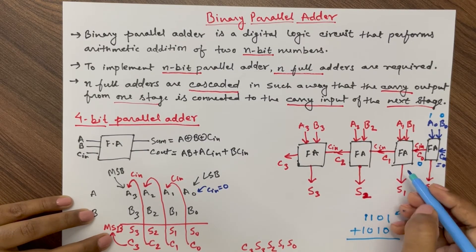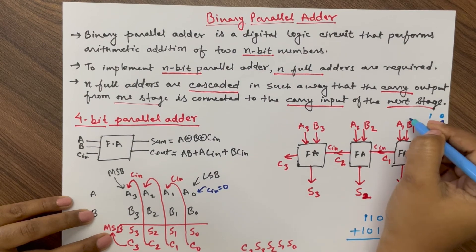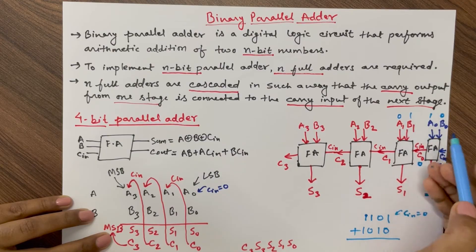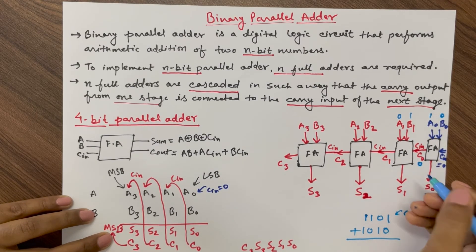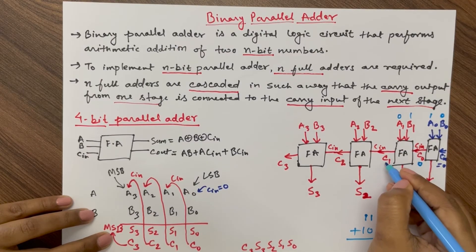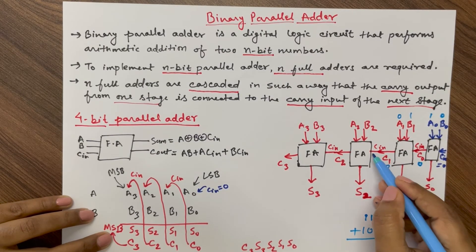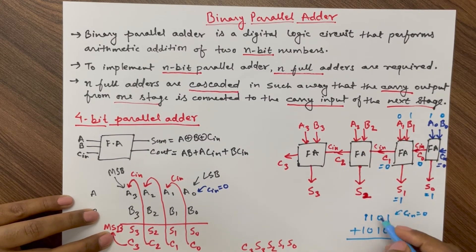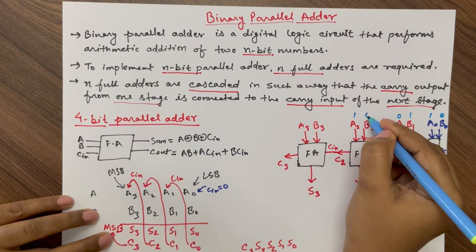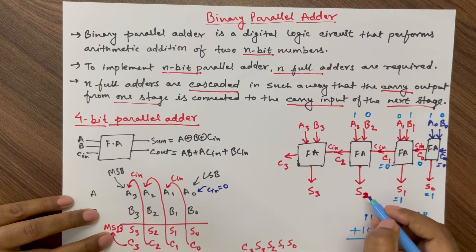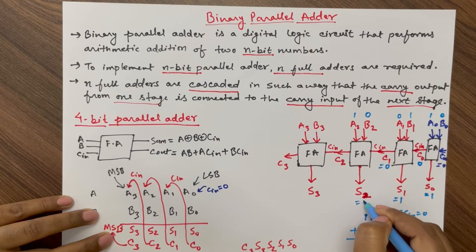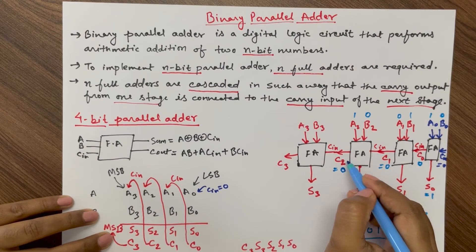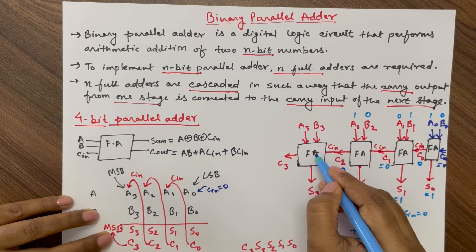For the next stage, A1 and B1 are 0 and 1, with C-in = 0. So 0 XOR 1 XOR 0 gives S1 = 1, and carry output C1 = 0. This C1 acts as C-in for the next stage. A2 and B2 are 1 and 0, so XOR of all three gives S2 = 1, and carry output C2 = 0.